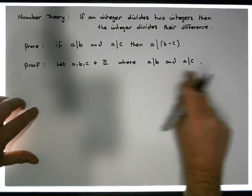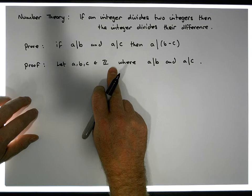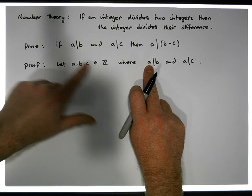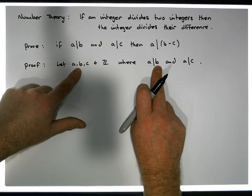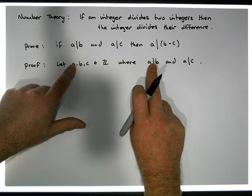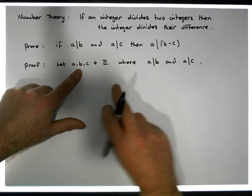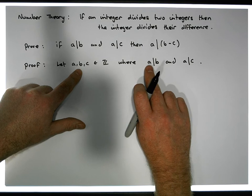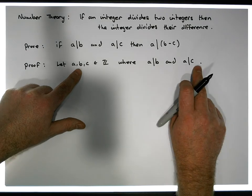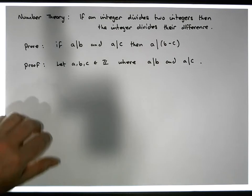So we're given this particular property. We have three integers. We know that the first integer — let's call it A — divides the second one B, and A also divides the third one C. They could all possibly be the same integer, or they could be different. But what we do know is that A divides B and A divides C. And what we'd like to show is that A divides the difference between them.